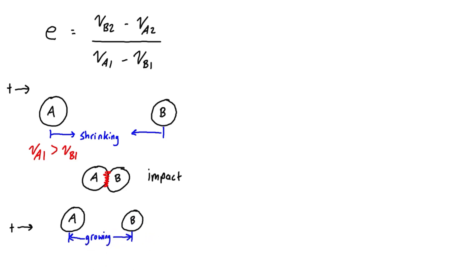So after impact, basically v_a2 is going to have to be less than v_b2. When we consider to the right being the positive direction, as long as this one is moving faster in this way than this one, then that separation is going to be growing.